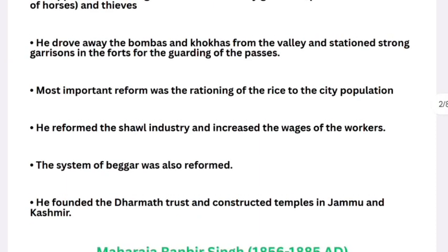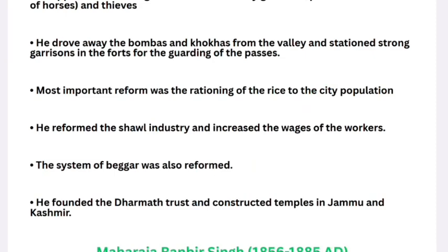The most important reform was the rationing of rice to the city population. He reformed the shawl industry and increased the wages of workers. The bhaiqar system — forced labor — was also reformed. He reformed dharma trusts and constructed temples in Jammu and Kashmir. These are the important points regarding Gulab Singh's first role as the Dogra ruler of Jammu and Kashmir.